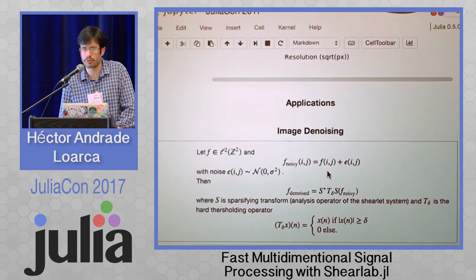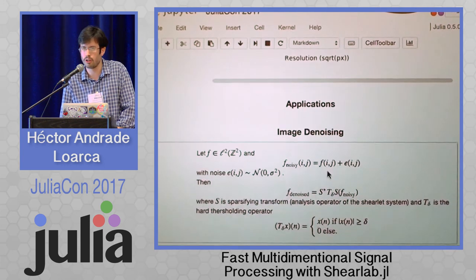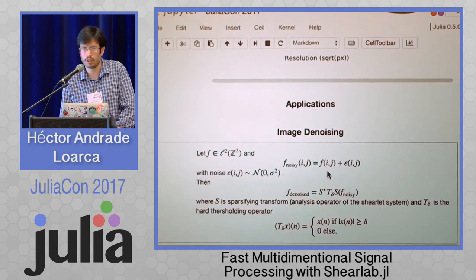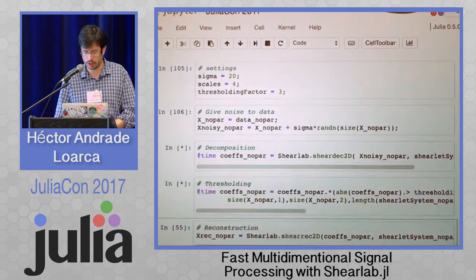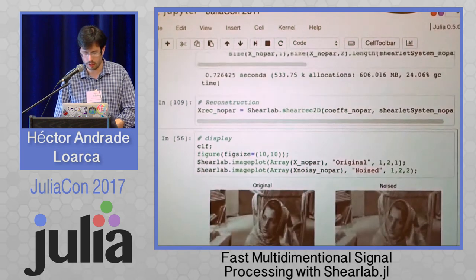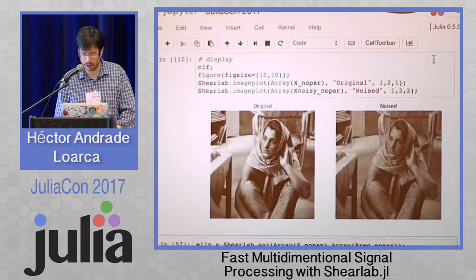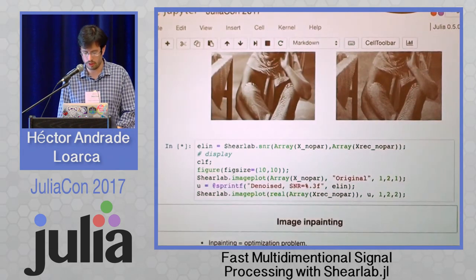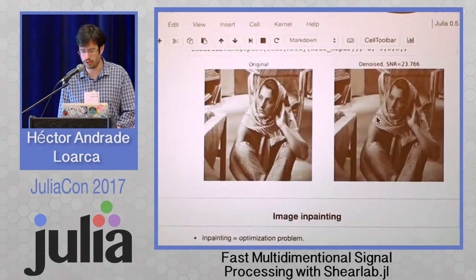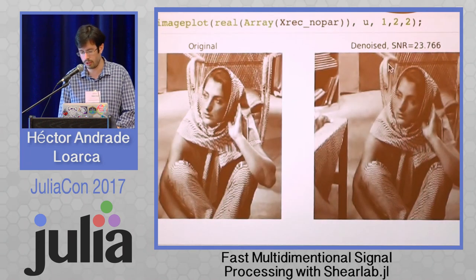Now for applications of the shearlet transform. For image denoising: noise represents very high frequencies, which in a natural image are not covered by important features. Performing the shearlet transform, the coefficients with the smallest magnitude correspond to noise. Deleting them denoises the image. Using Gaussian noise, the denoised result has a signal-to-noise ratio of 23 decibels, which is quite decent.